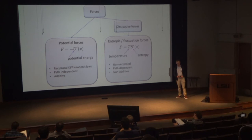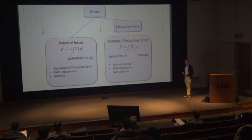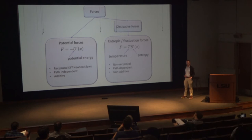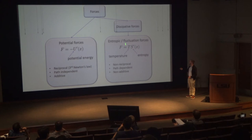In order to find a theory of gravity that perhaps fits into the standard model, or can explain things like dark matter, new theories of gravity have been proposed that challenge fundamental assumptions. One of which is the theory of entropic gravity. An entropic force is a certain type of dissipative force which is emergent as a consequence of the second law of thermodynamics. An entropic force is given by temperature times the gradient of the entropy. Entropic forces are, by their very nature, non-reciprocal, path-dependent, and not additive.